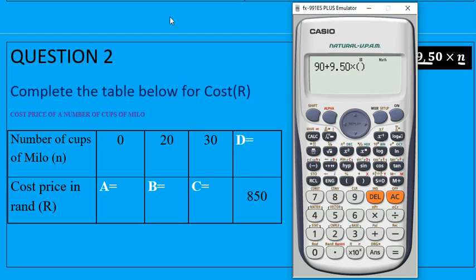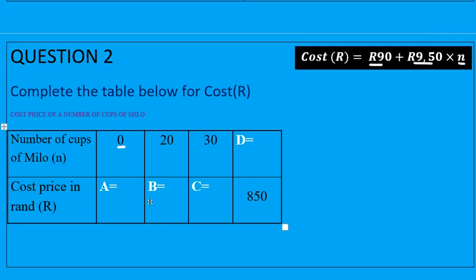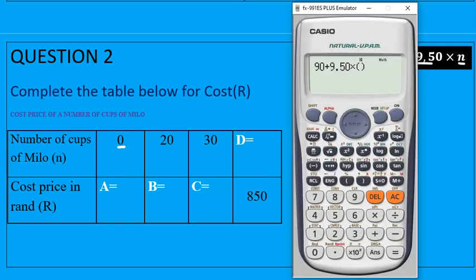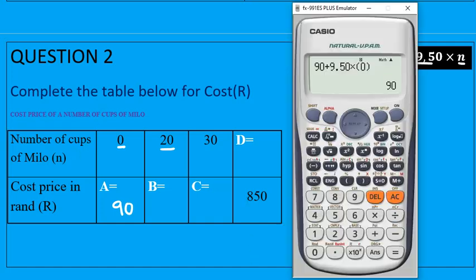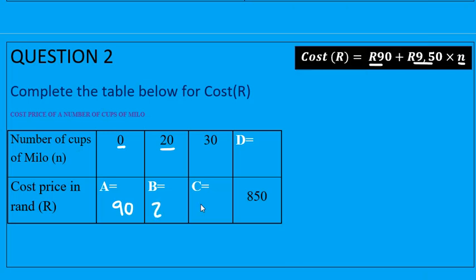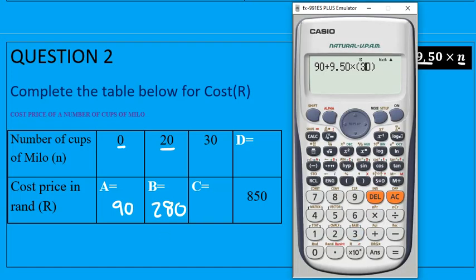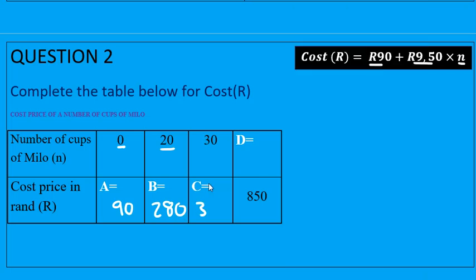Starting with zero cups — if no cups are made, the cost is R90, which is just the fixed cost. For 20 cups, the cost is R280. For 30 cups, the cost is R375.